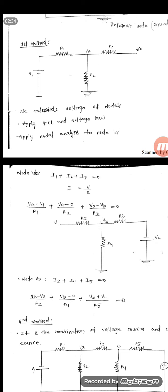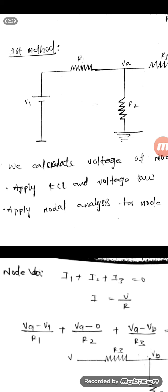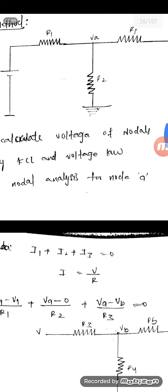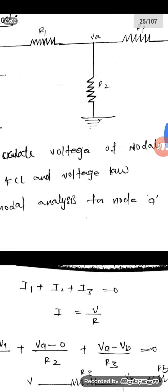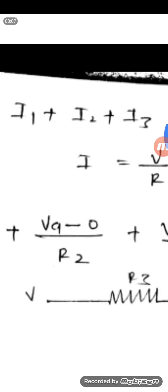What is I1? I1 is the potential difference between VA and V1 divided by R1. Current equals voltage divided by R, but here we have 2 different voltages, that is why it is the potential difference between the 2 points by R1. Similarly, what is I2? I2 is the potential difference between node A and 0, that is VA minus 0 by R2.